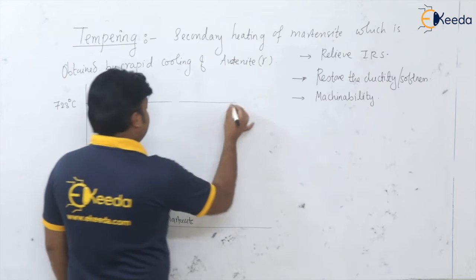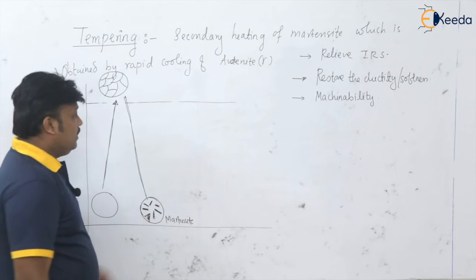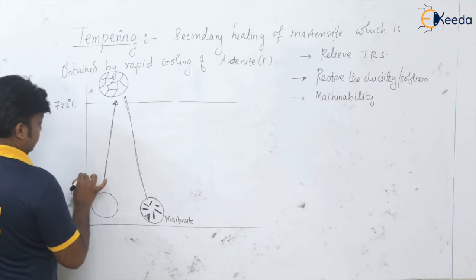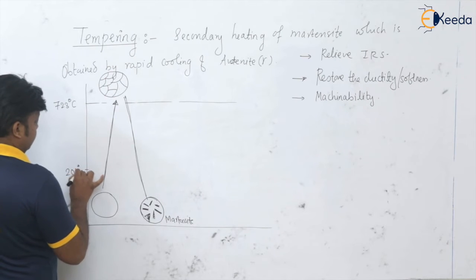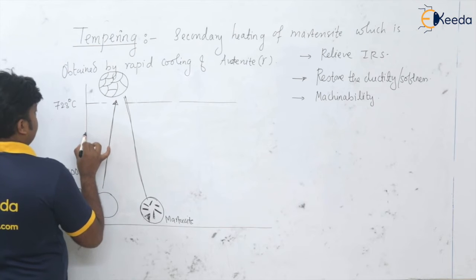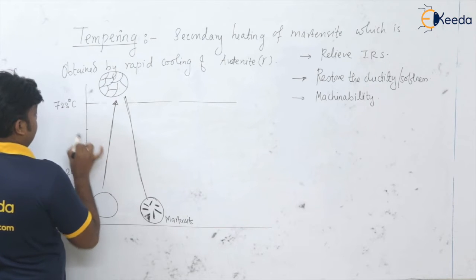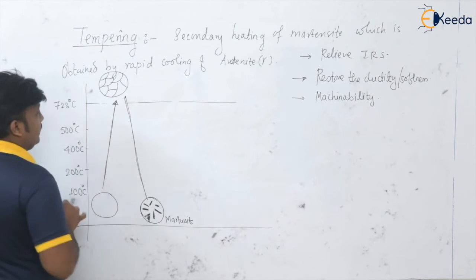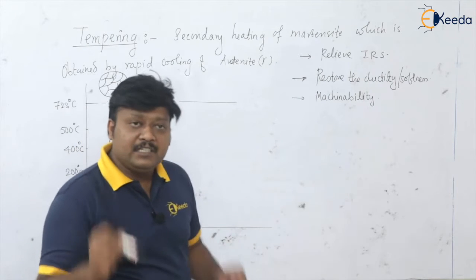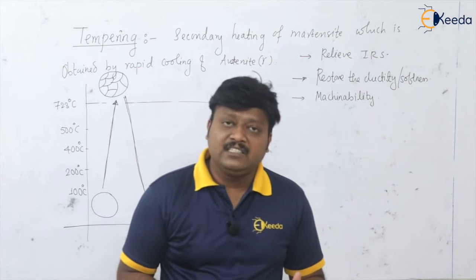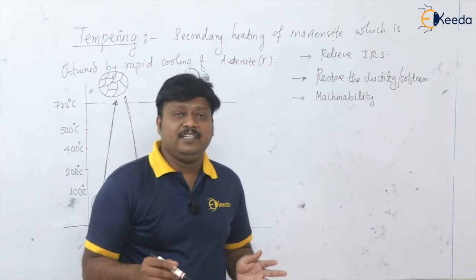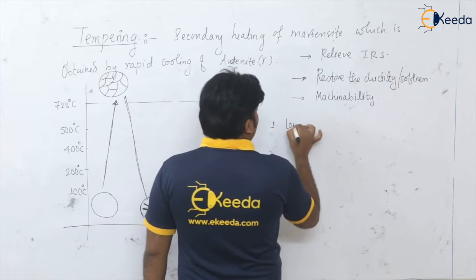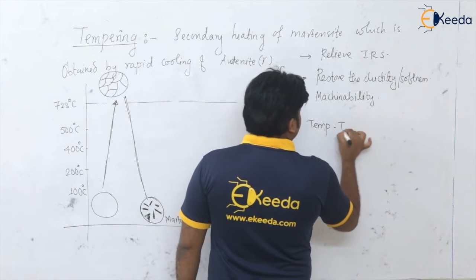There are temperature ranges to which we can heat this martensite — from 100 degrees centigrade, 200 degrees centigrade, 400 degrees centigrade, up to 500 degrees centigrade. Based upon the various temperature ranges in which you heat this martensite, the tempering process is classified into three types. Number one is low temperature tempering.